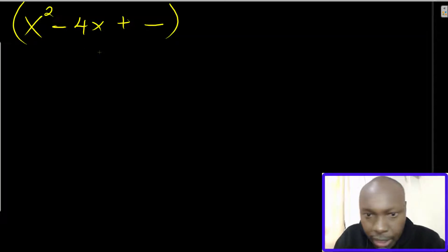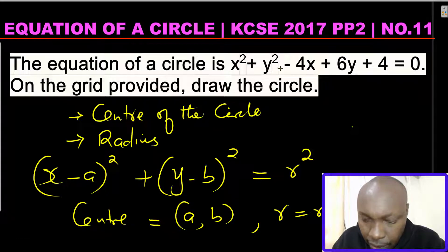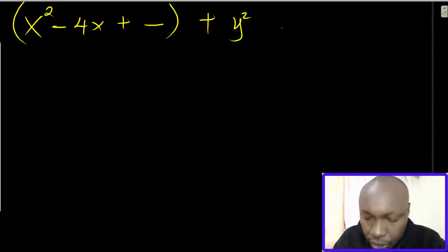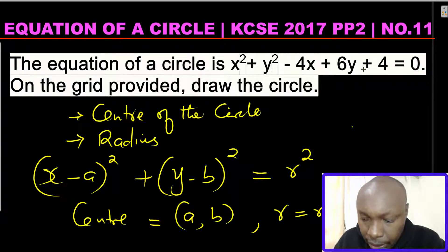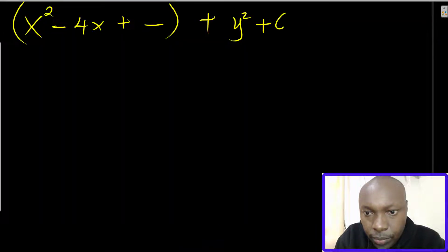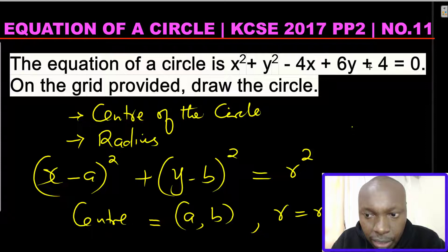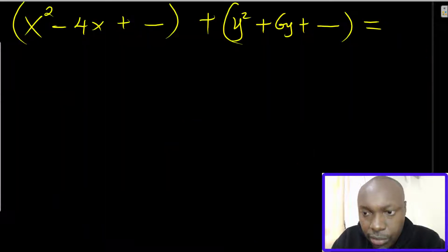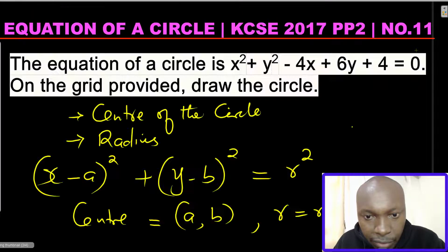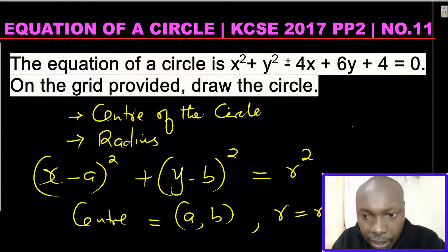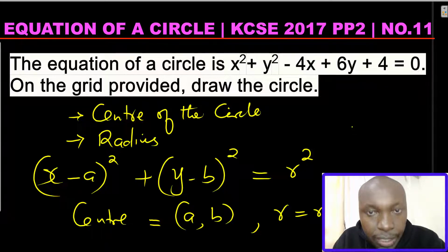We group x squared minus 4x, complete the square for those, then pick y squared plus 6y and complete the square for those. The constant 4 on the left side is taken to the right-hand side, so positive 4 becomes negative 4 on the right. By doing so, you'll be able to write the equation in the standard format.